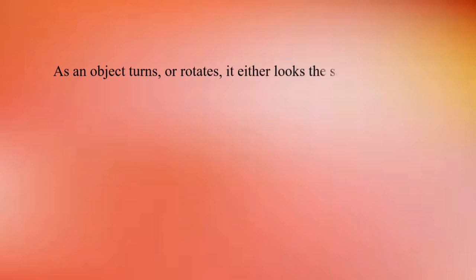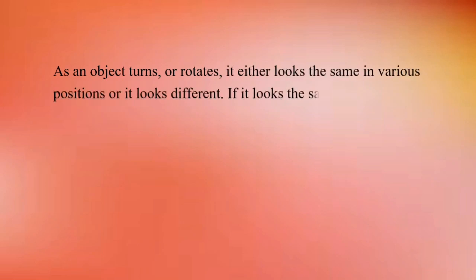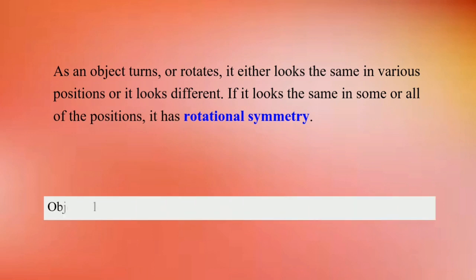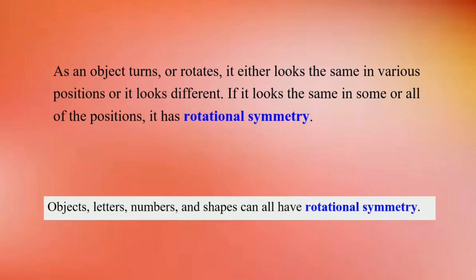As an object turns or rotates, it either looks the same in various positions or it looks different. If it looks the same in some or all of the positions, it has rotational symmetry.